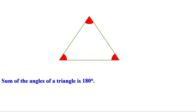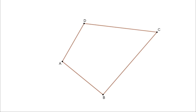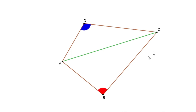Now what about a quadrilateral? We know there are four angles for a quadrilateral. What is the sum of the four angles of a quadrilateral? Let us take a quadrilateral at first. Now let me draw a diagonal. Now the quadrilateral is divided into two triangles. This is an angle of triangle ADC, and at the same time it is an angle of the quadrilateral ABCD. In the same way, this is an angle of triangle ABC, and at the same time it is an angle of the quadrilateral ABCD.